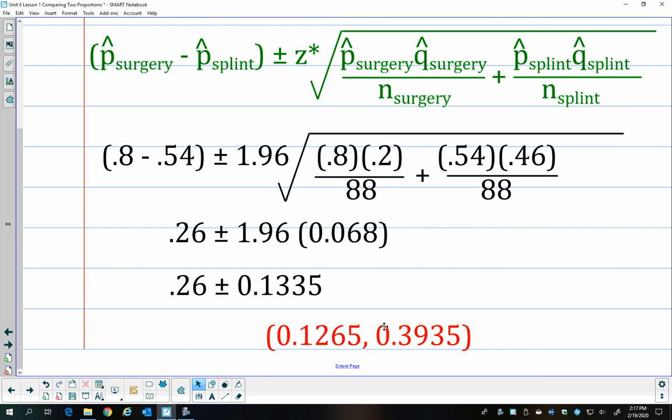And so now the important thing, the thing that we always have to do is we have to explain, well, what does that interval mean? Remember, these are proportions. So these values represent percentages. So 12.65%, 39.35%.